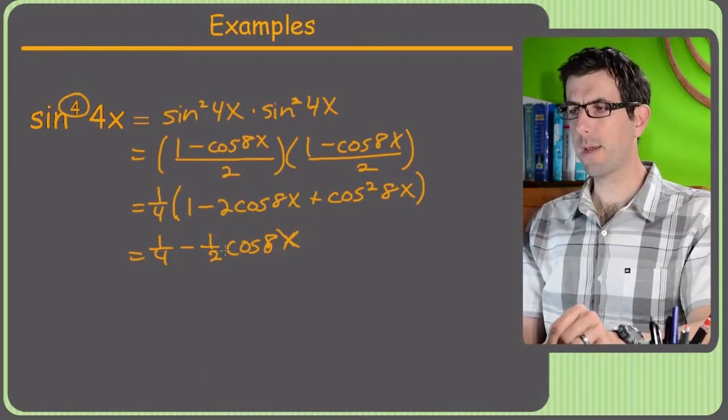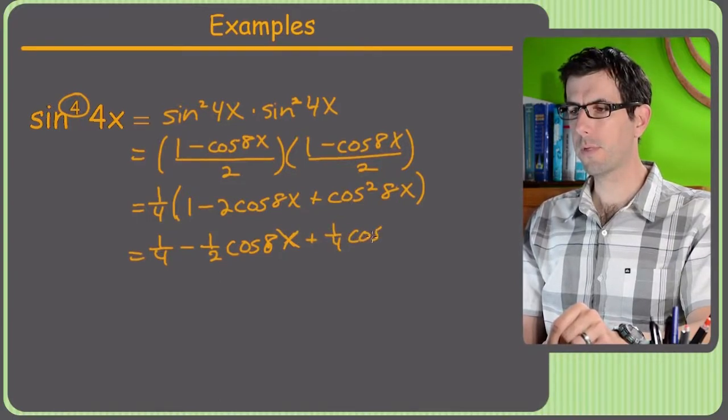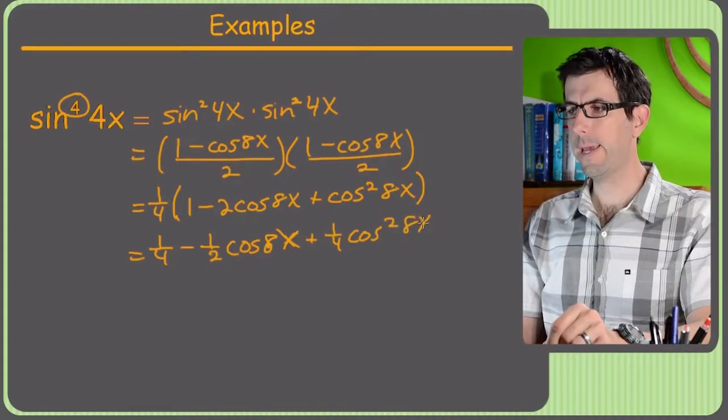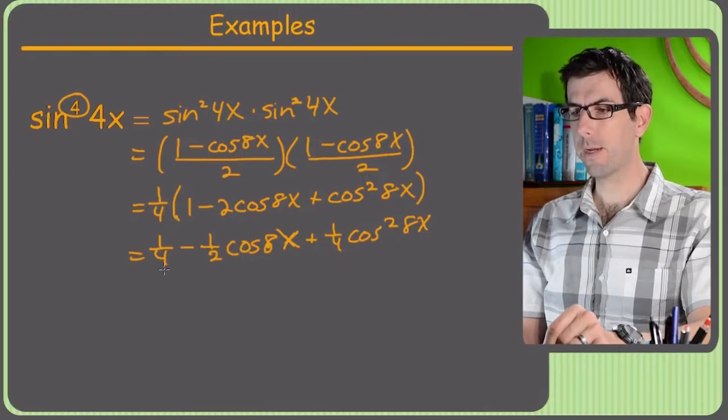So 2 fourths was 1 half, and then plus 1 fourth cosine squared 8x. All right. So now we've got no more parentheses to worry about. We can sub in. So this term right here, still have this stuff as is.